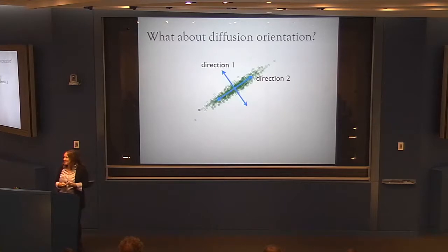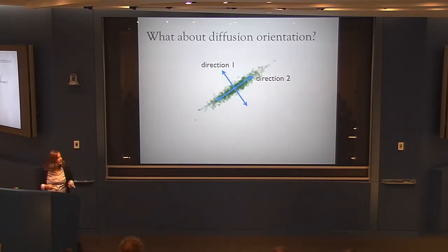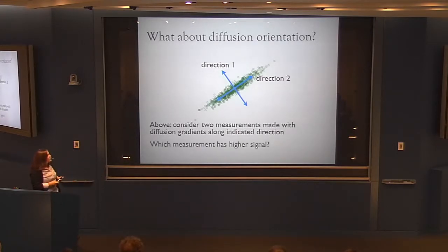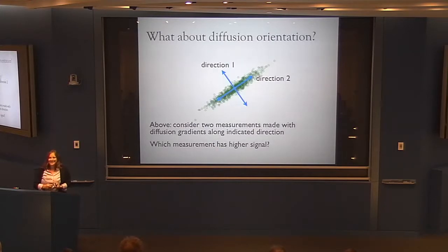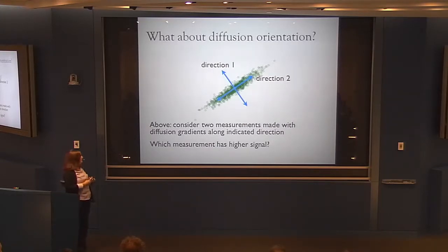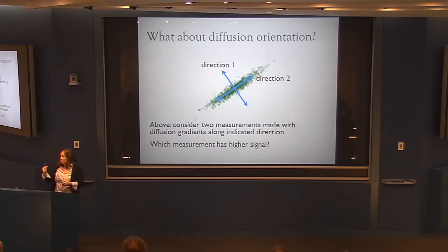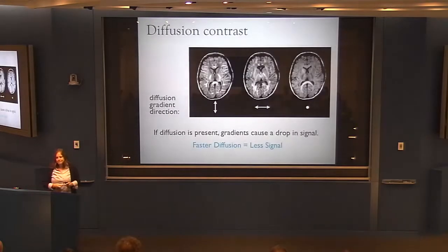Consider two measurements of a diffusion process: one with gradient along one direction and one perpendicular. Which has higher signal? Direction one — because the water molecules are not displacing as far along that direction. The direction along which water molecules displace a long distance will have more signal attenuation, hence less signal. Once comfortable with this, you can look at a diffusion-weighted image and tell what direction the diffusion weighting was along, given some anatomical knowledge.